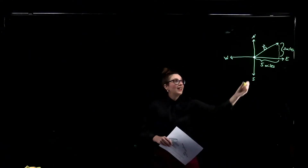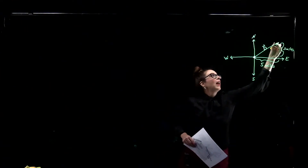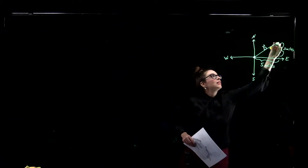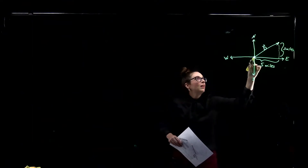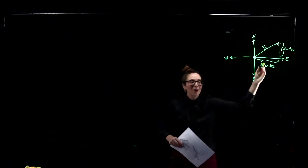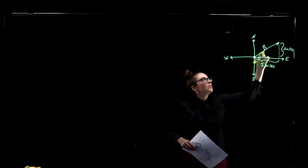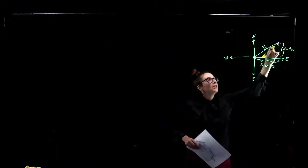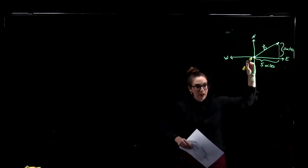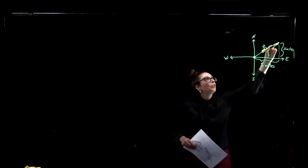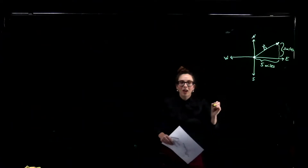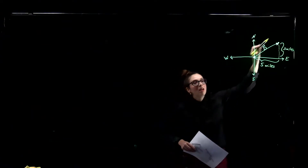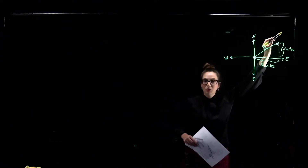I want to connect the distance between where I started and where I ended — if we're talking about displacement. To do that I'm going to draw this vector. Our vector has a direction going up and to the right, and I always draw a little arrow tip at the end of my vector to indicate the direction of my motion.